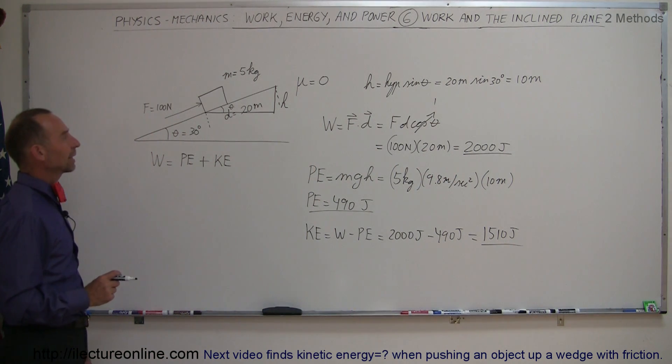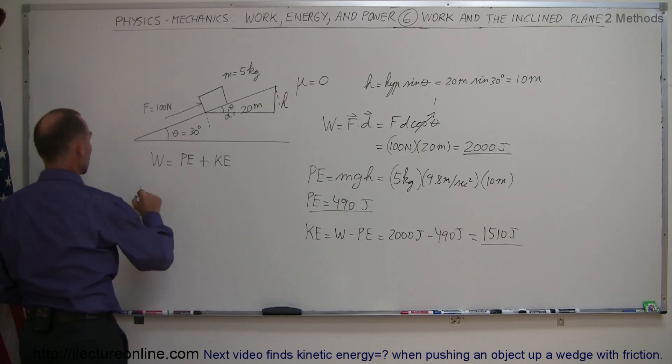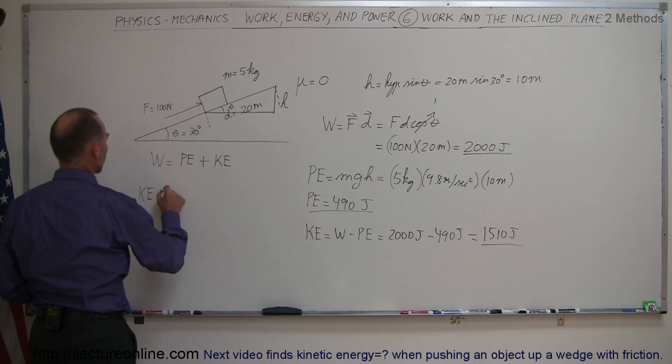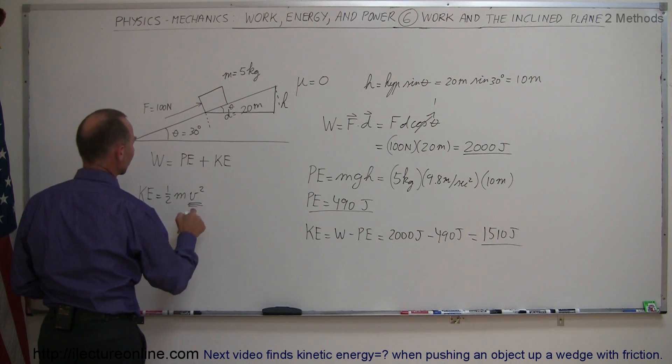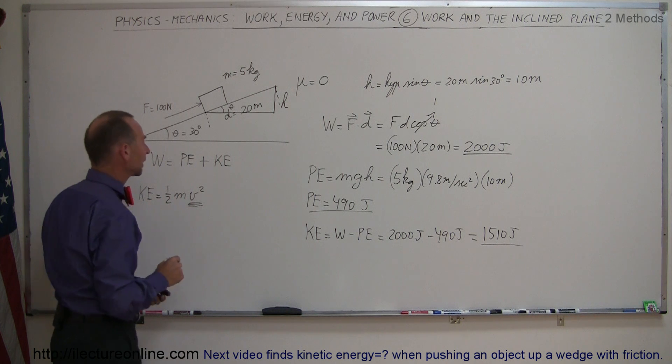Now, could we have figured out the kinetic energy in another way? Well, yes, we can say that kinetic energy is equal to one-half mv squared, so if we somehow figured out how much velocity the object had, knowing the mass, we could also have figured out the kinetic energy.